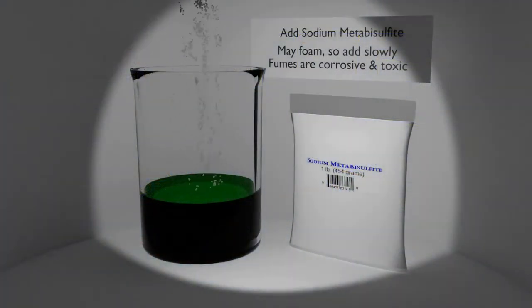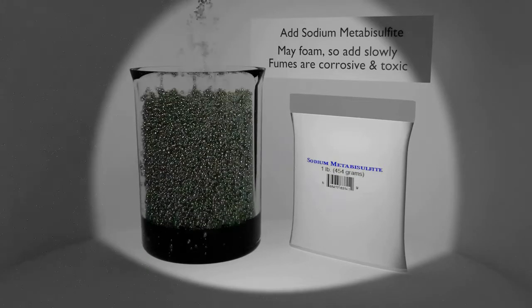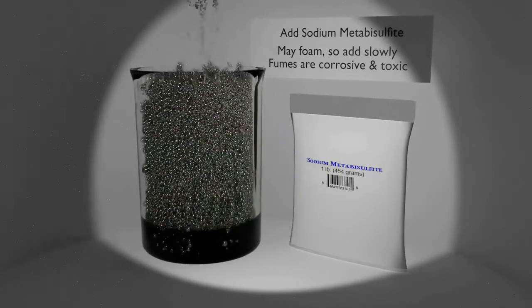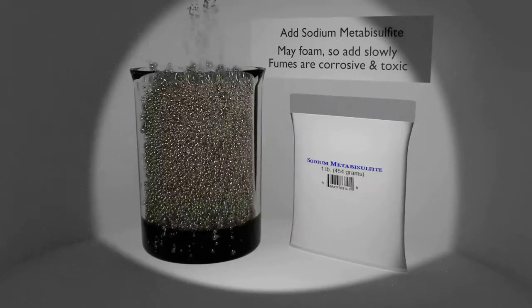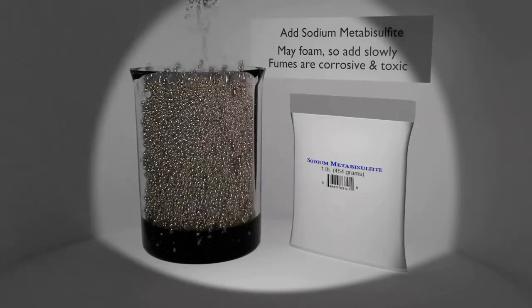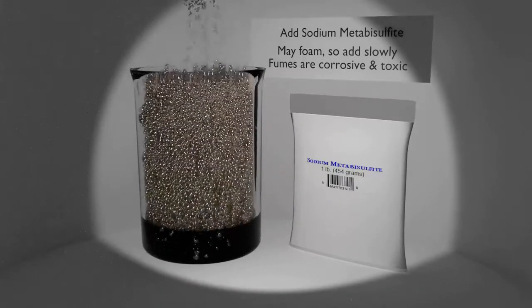Precipitation using sodium metabisulfite: do this inside of a bucket. Sodium metabisulfite has a tendency to foam out of its container, so add it slowly and do not heat the solution. Stay well away from the fumes. Typical precipitation time at room temperature is about 30 to 60 minutes.